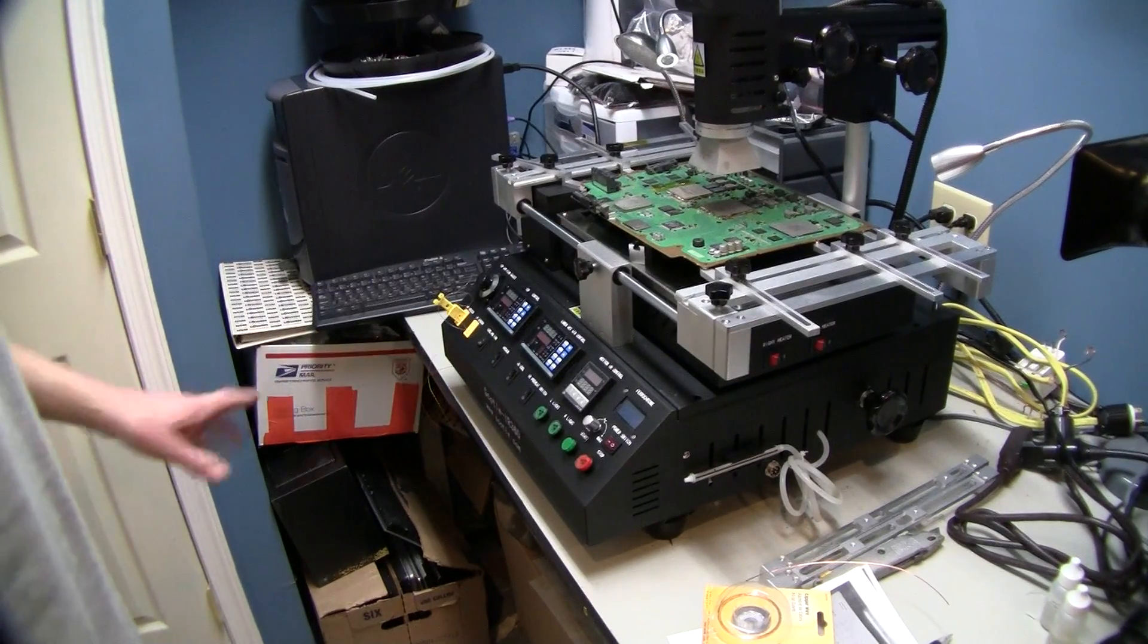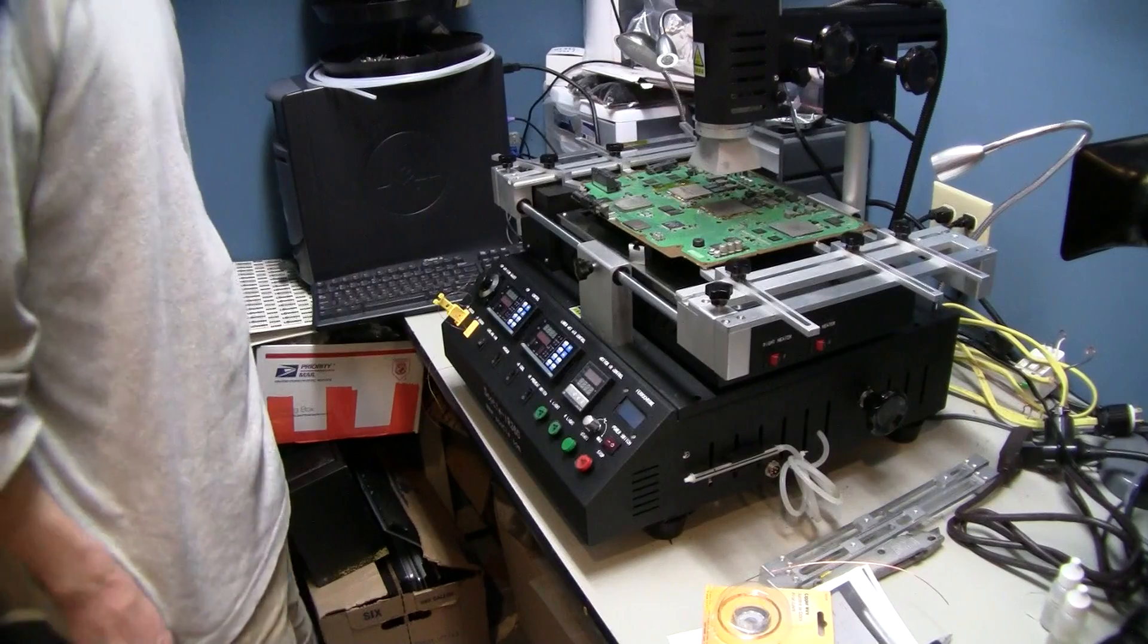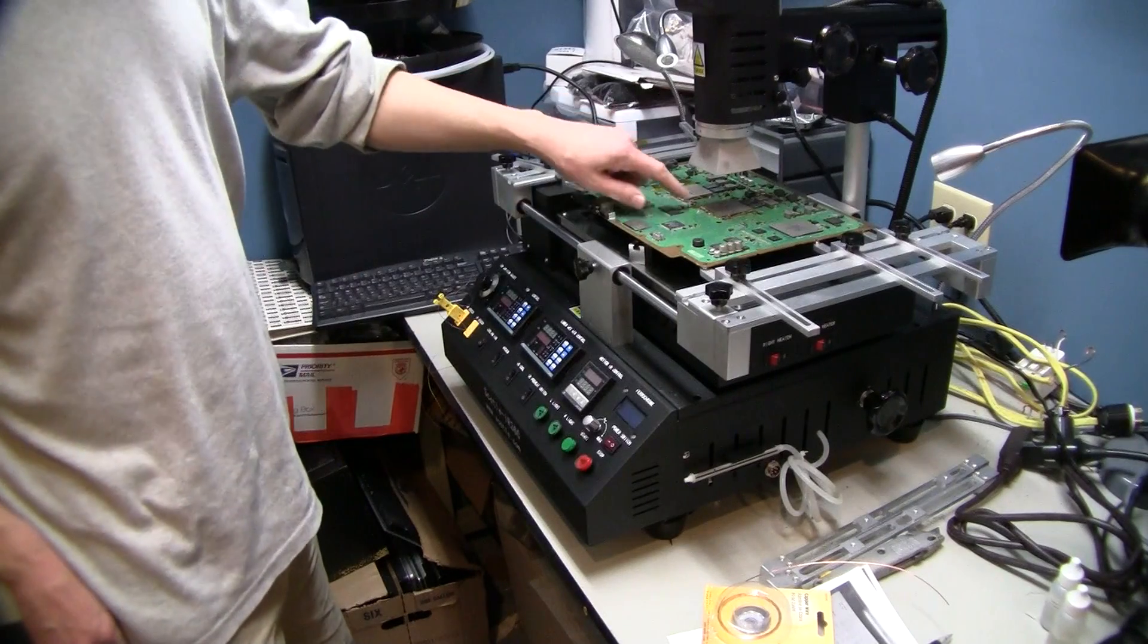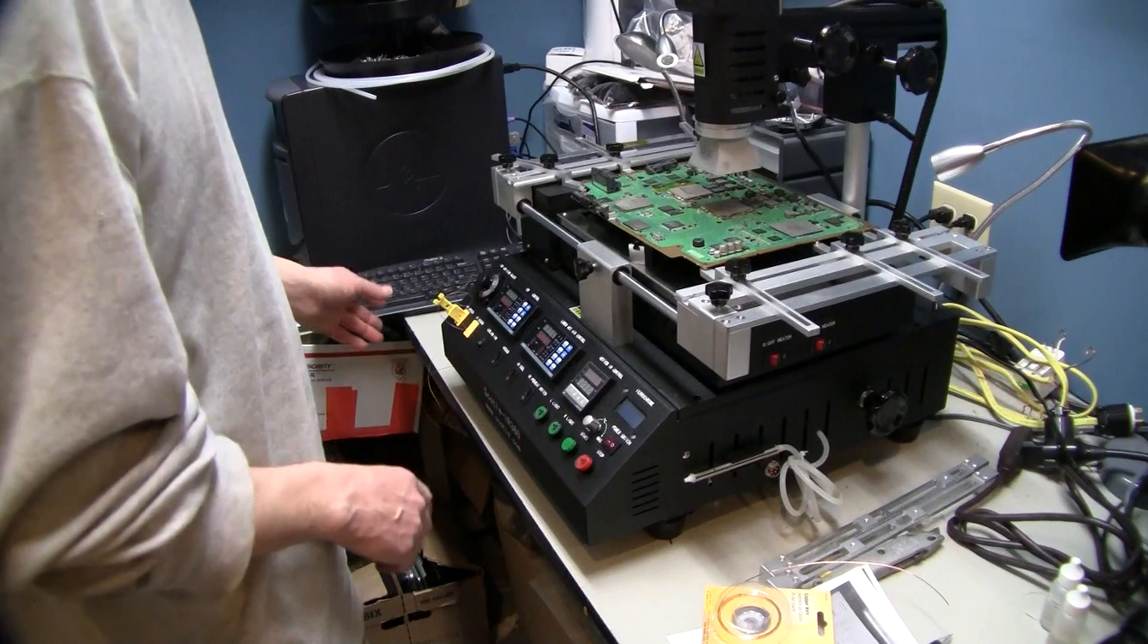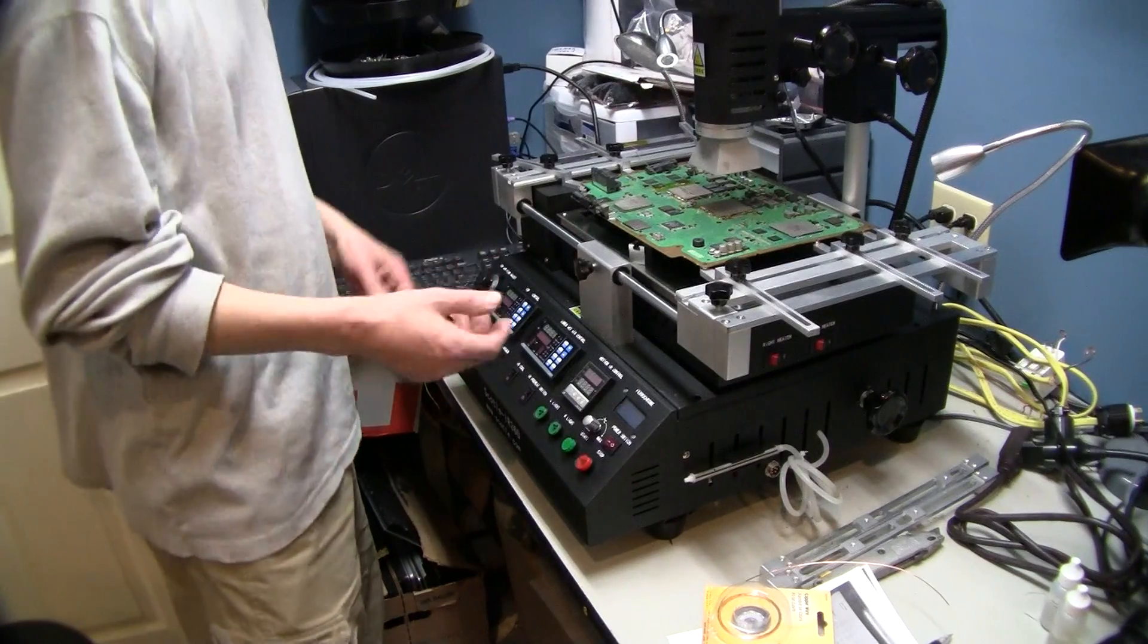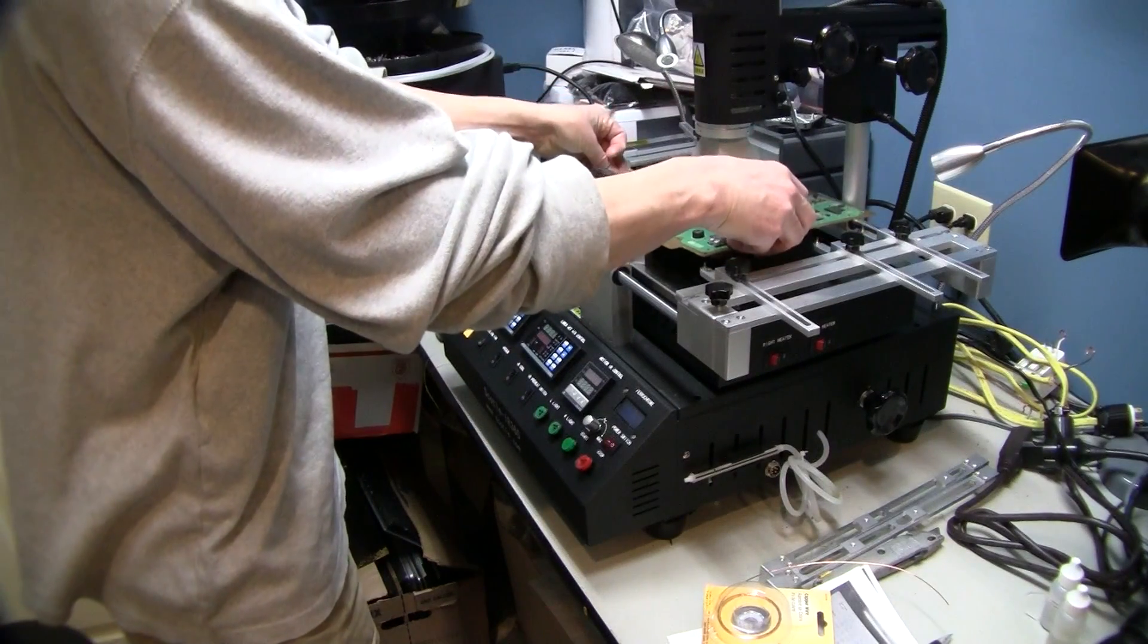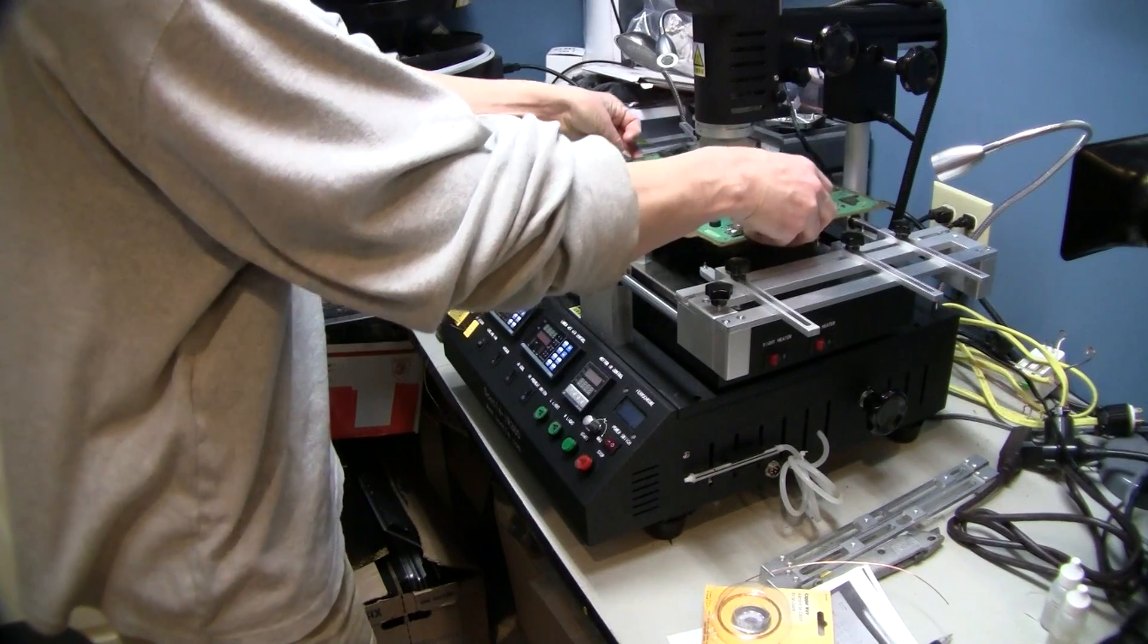Alright, welcome back. This is the Scotel IR 360 video 2. We went ahead and probed our GPU chip with a fine wire probe. We're now going to install a bottom board temperature probe. So we're going to loosen up our board here and move it off to the side.